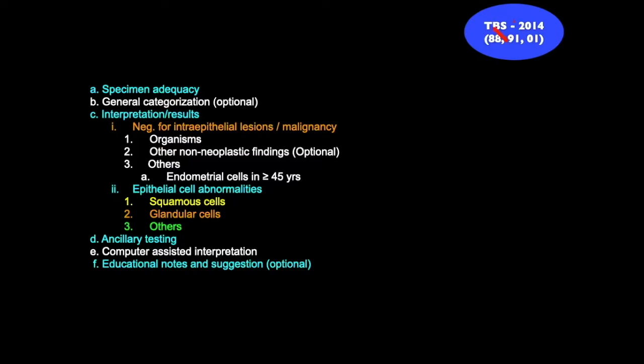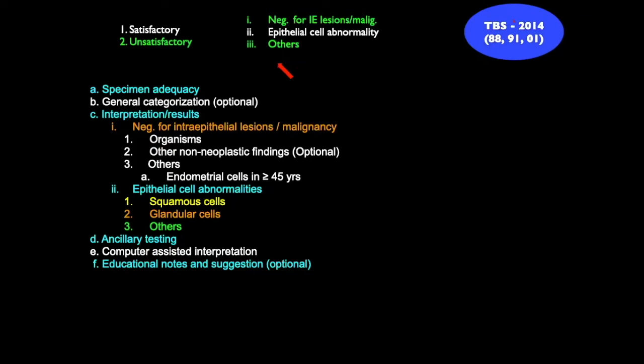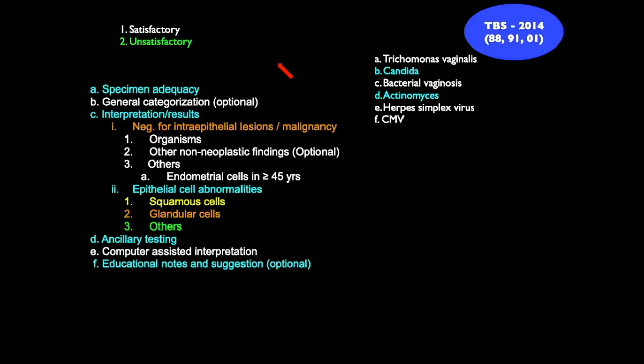For specimen adequacy, there are two categories: satisfactory or unsatisfactory. Previously we used to have 'suboptimal' but now that term has been removed. In general categorization, there are three things: negative for intraepithelial lesion or malignancy, epithelial abnormality present, and others. Coming to the interpretation section — the first is negative for intraepithelial lesions or malignancy.